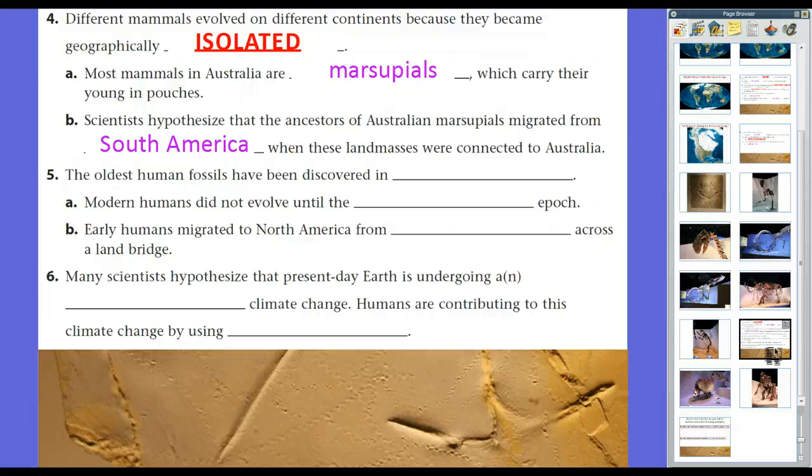Now, the quaternary extinction event, there's a lot of arguments over what ended the Neogene period or the tertiary period. And we brought in the quaternary period. There's things that maybe a comet landed. That there might have been climate change. But a lot of scientists would say that humans, and humans came around in the Cenozoic era. The oldest, what we would consider human fossils, are found in Africa.